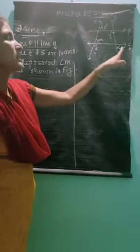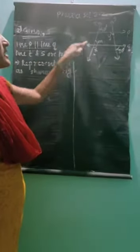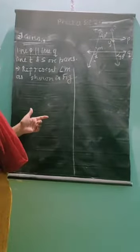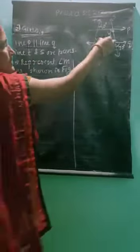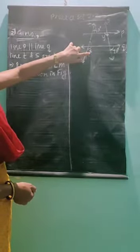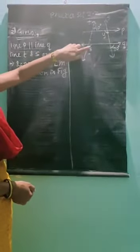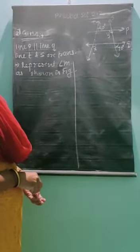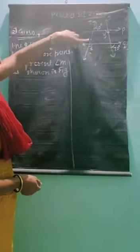Let us consider the next question. Line P is parallel to line Q, line T is one transversal, and line S is another transversal. We have to find X and Y. Observing the figure, angle 40 and angle X do not make any pair — not corresponding, not alternate, and not interior angles. So we consider angle M such that it makes a pair with one of the angles.